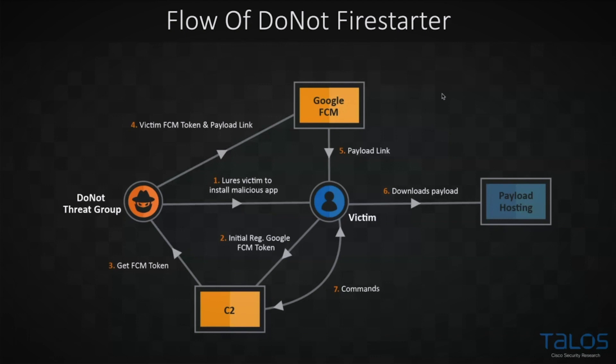It's not hard to see that if, for some reason, the hard-coded C2 is taken down, it's really easy for the operators to send a new Firebase message to the malware and give it another payload with a different C2 hard-coded. So what this really means is that it's not possible to stop the malware by taking the C2 down alone. You also need to take down the account for the Google Firebase Cloud Messaging Service; otherwise, the malware will keep running and the malicious operators can always get back in control.